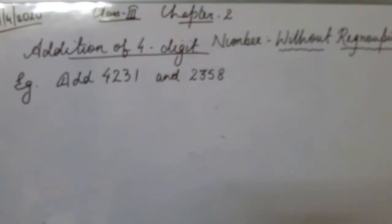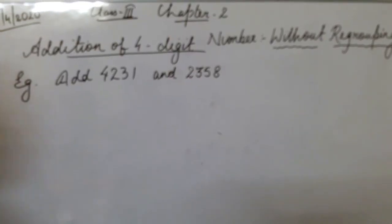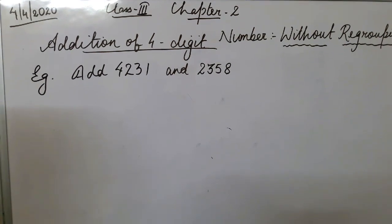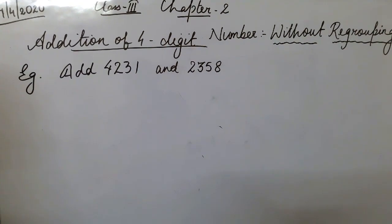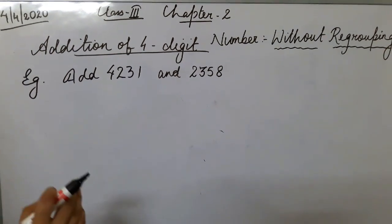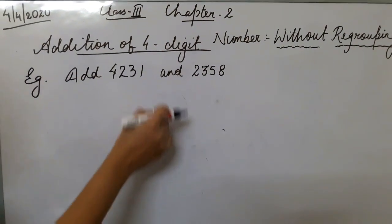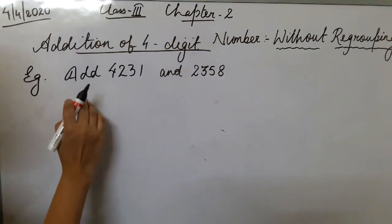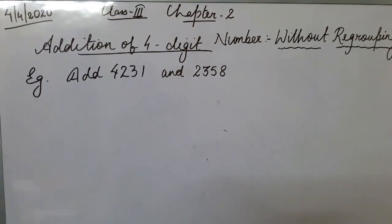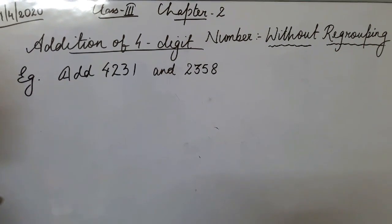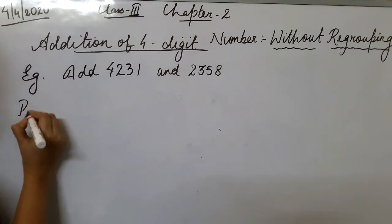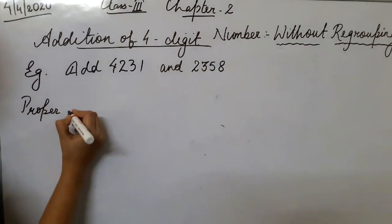Let's start with the first topic: addition of 4-digit numbers without regrouping. What does without regrouping mean? Without regrouping, there will not be any change of the groups of place value, and the answer you get will lie underneath the place values. Let's see it with an example: add 4,231 and 2,315. The first step will be the proper arrangement of the numbers.